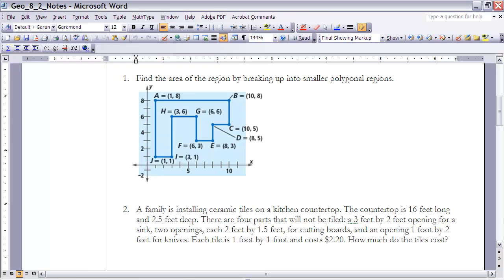So I'd like to take a look at a couple problems now that relate to the area postulate. The first is if you're given a figure that is not a rectangle, we can still find the area by using the fact that we can break it up into smaller rectangles and add the sum of those to get the total. So let's find the area of the region by breaking it up into smaller polygonal regions.